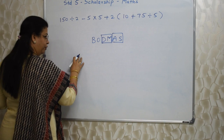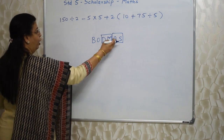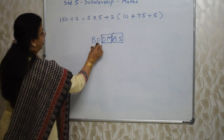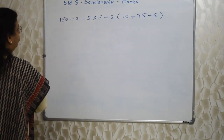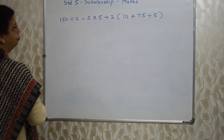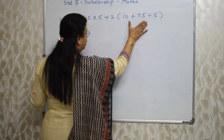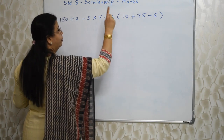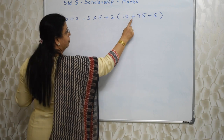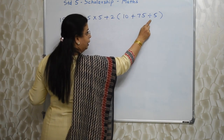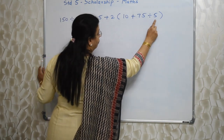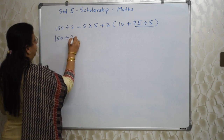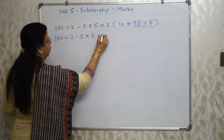Similarly, addition and subtraction are at the same level. So whichever operation comes first from the left side, perform that first. If division is first, divide first; if multiplication is first, multiply first. Same applies for addition and subtraction. I have taken one example of a BODMAS sum here — let's solve it.